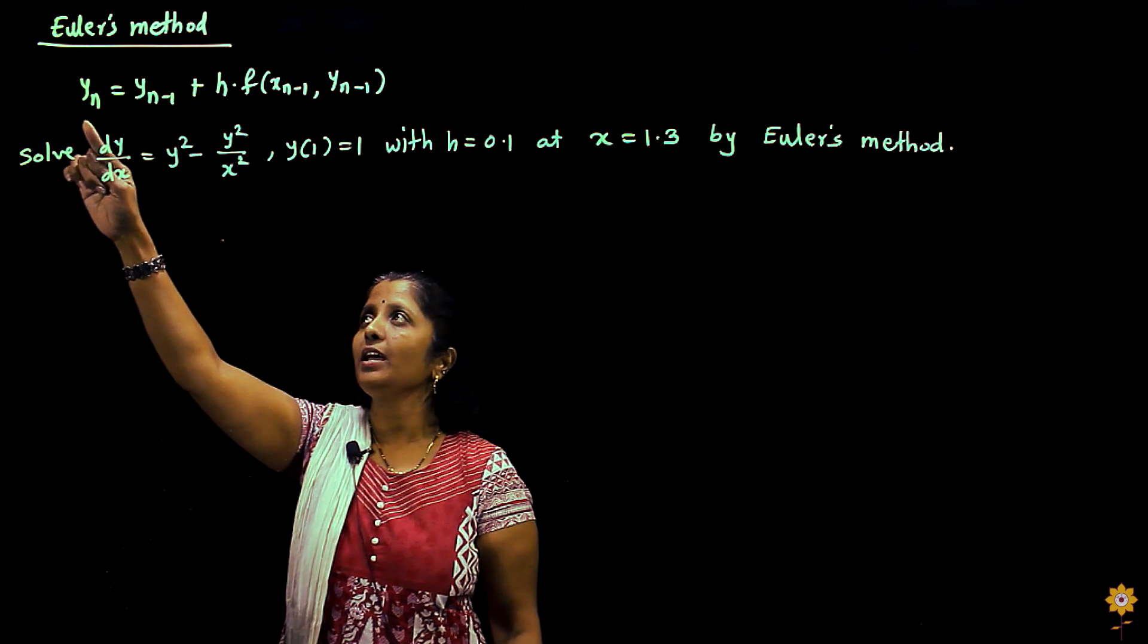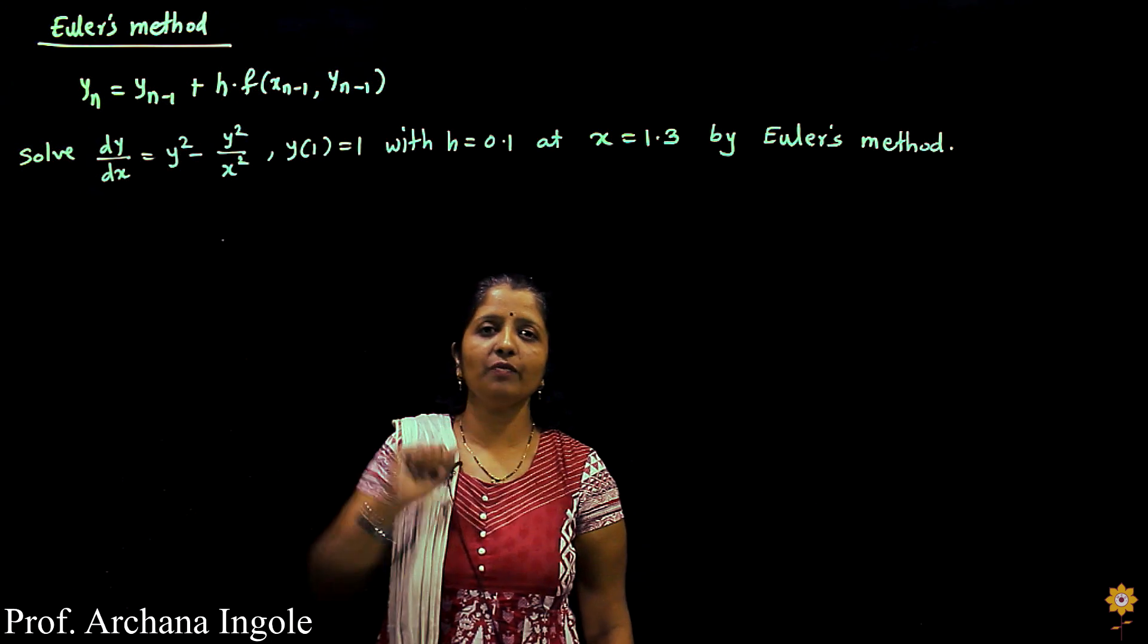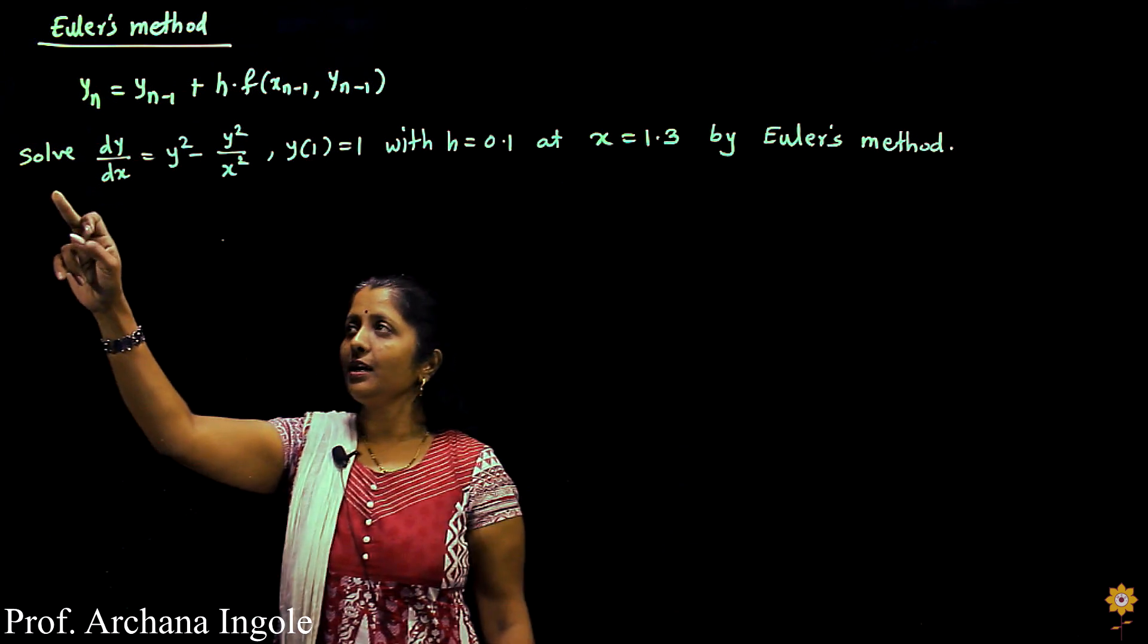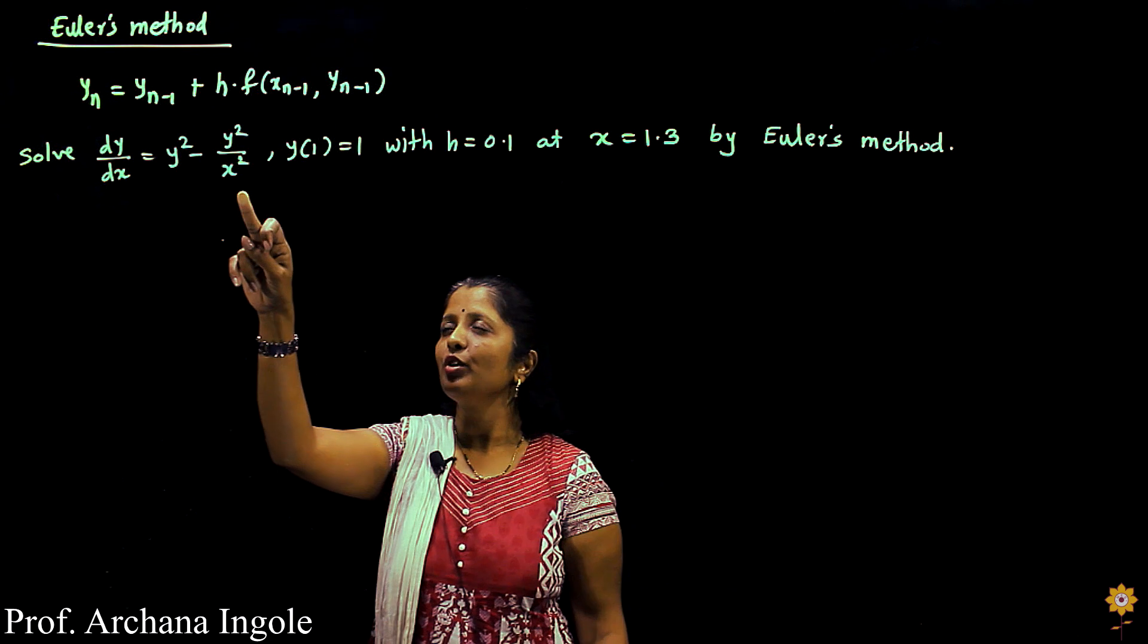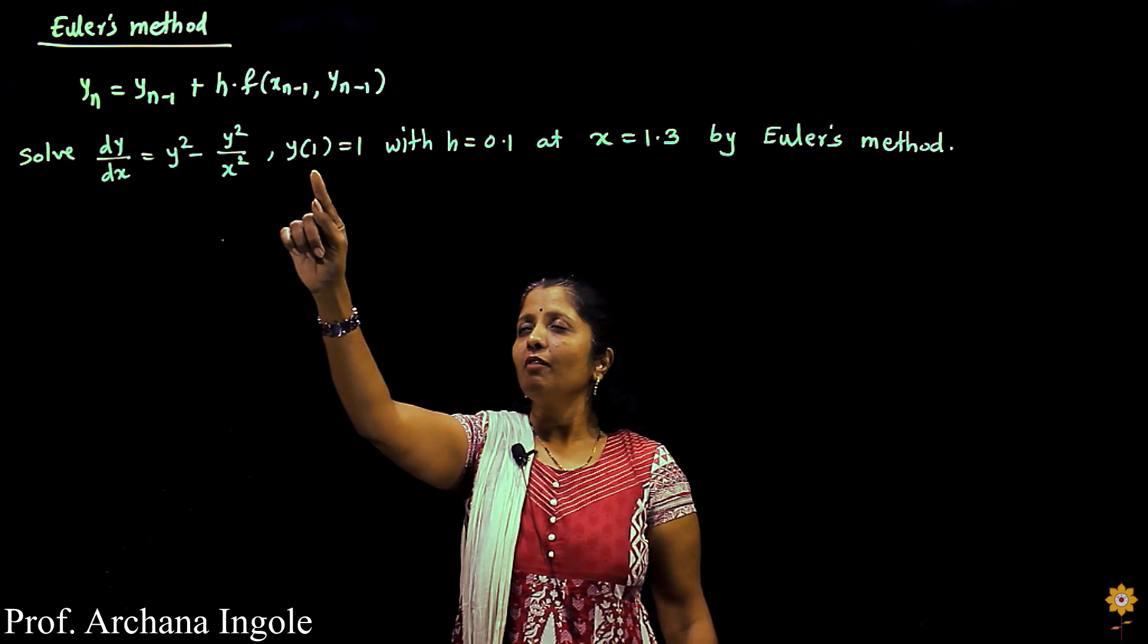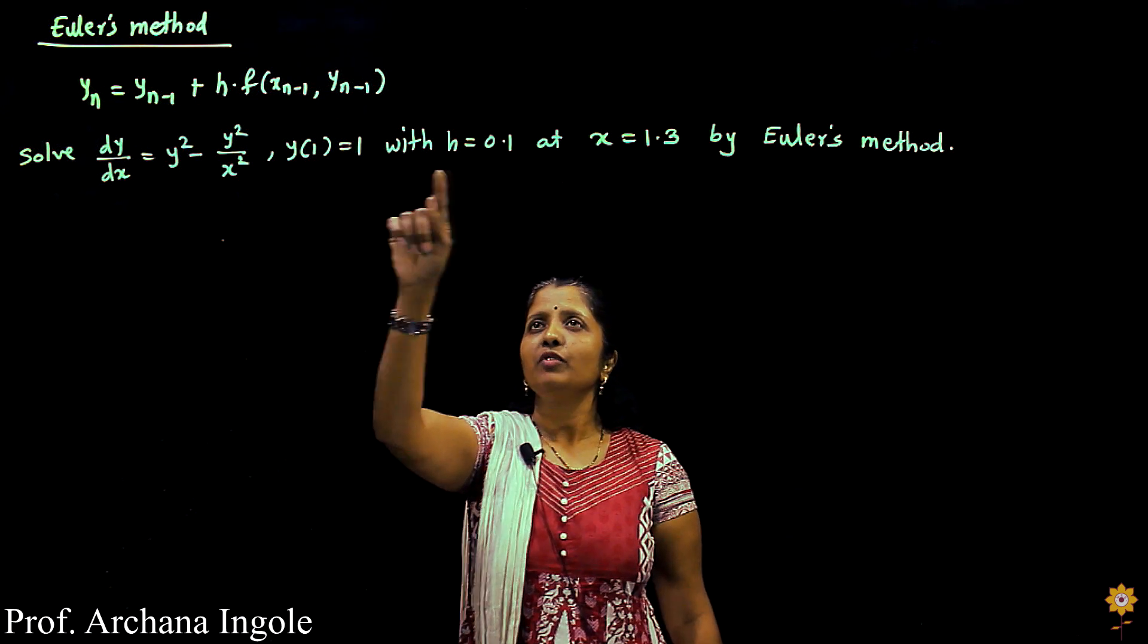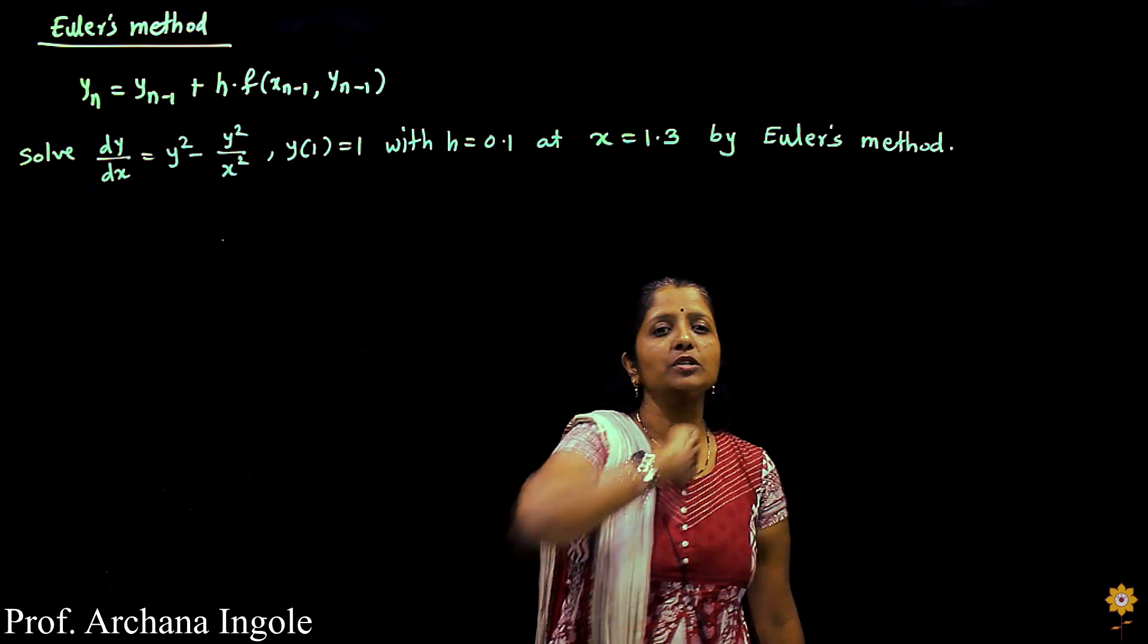The formula for Euler's method is yn equal to yn minus 1 plus h into f of xn minus 1, yn minus 1. Let us take an example: solve dy/dx equal to y² minus y²/x², which is a first order differential equation at y(1) = 1 with h = 0.1 at x = 1.3 by Euler's method.